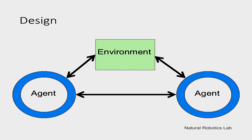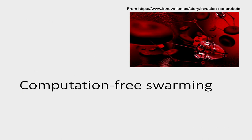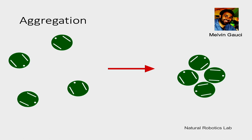Deborah explained well how outcome, algorithm, and environment are related, so I'm not going over this again. But what we are interested in is not how much information processing a particular agent needs to do in a group, but how little. That's the emphasis. And let's take a look at this in the particular context of a task where a bunch of robots have to gather in one place.